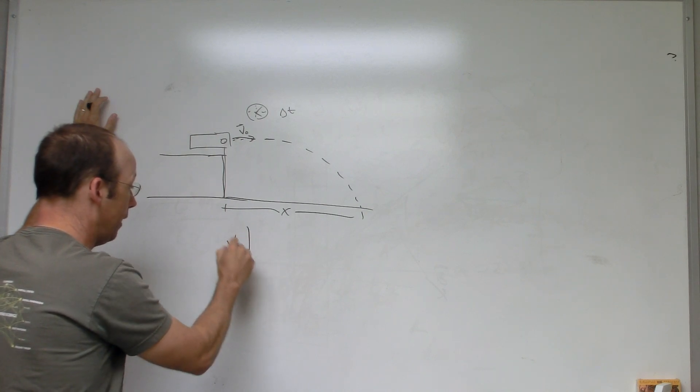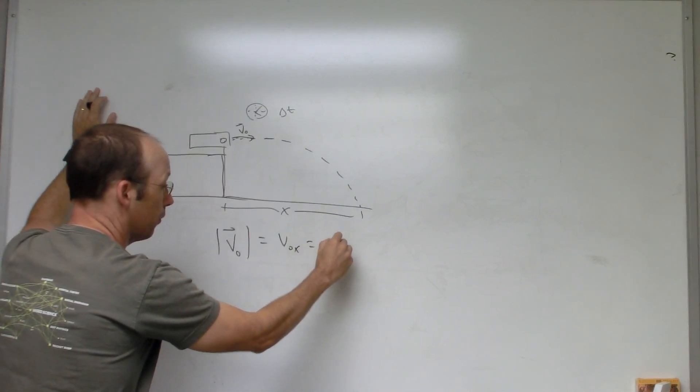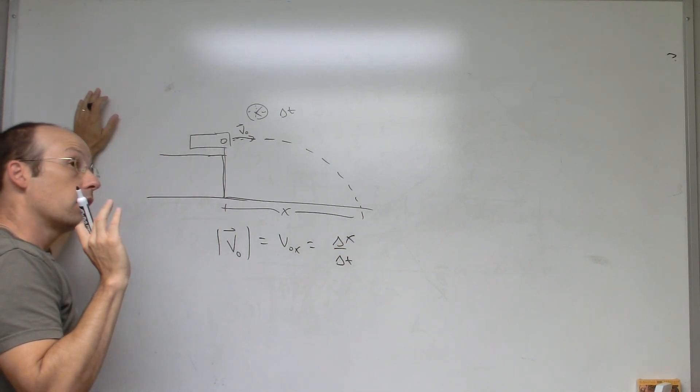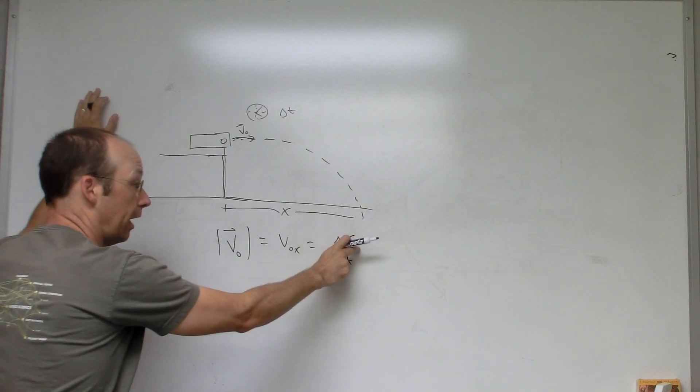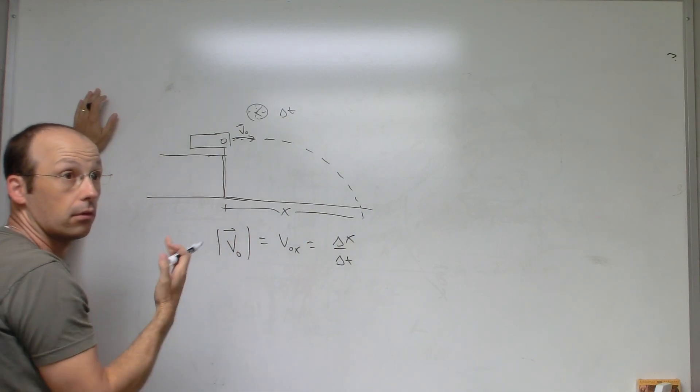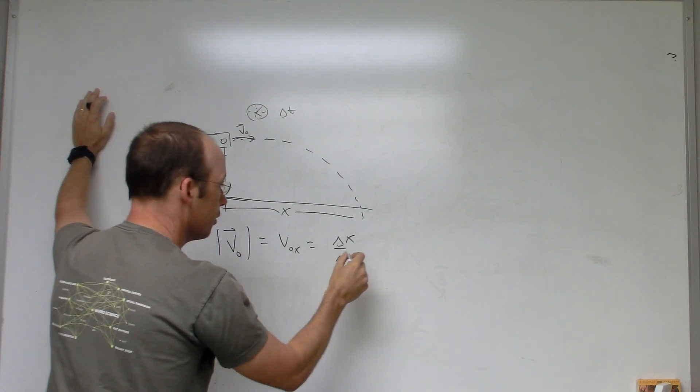So v0 magnitude equals v0x equals Delta X over Delta T. So you measure Delta X, you measure Delta T, and you want to find the v0, so it's not so bad.